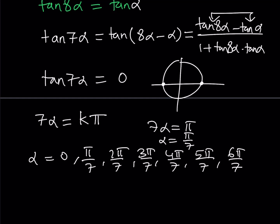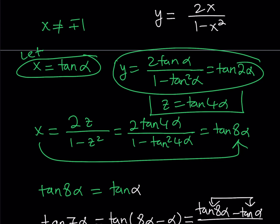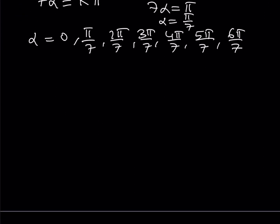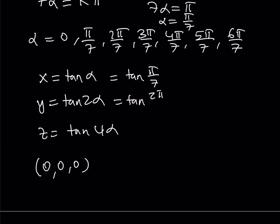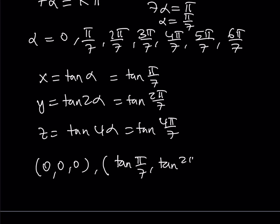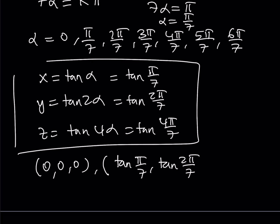We need to find the x, y, z values. Using our substitution: x equals tangent α, y equals tangent 2α, and z equals tangent 4α. For the first solution α equals 0, we get the triple (0, 0, 0) — a valid solution. For α equals π/7, we get (tangent π/7, tangent 2π/7, tangent 4π/7). By using all the α values we get all the ordered triples.